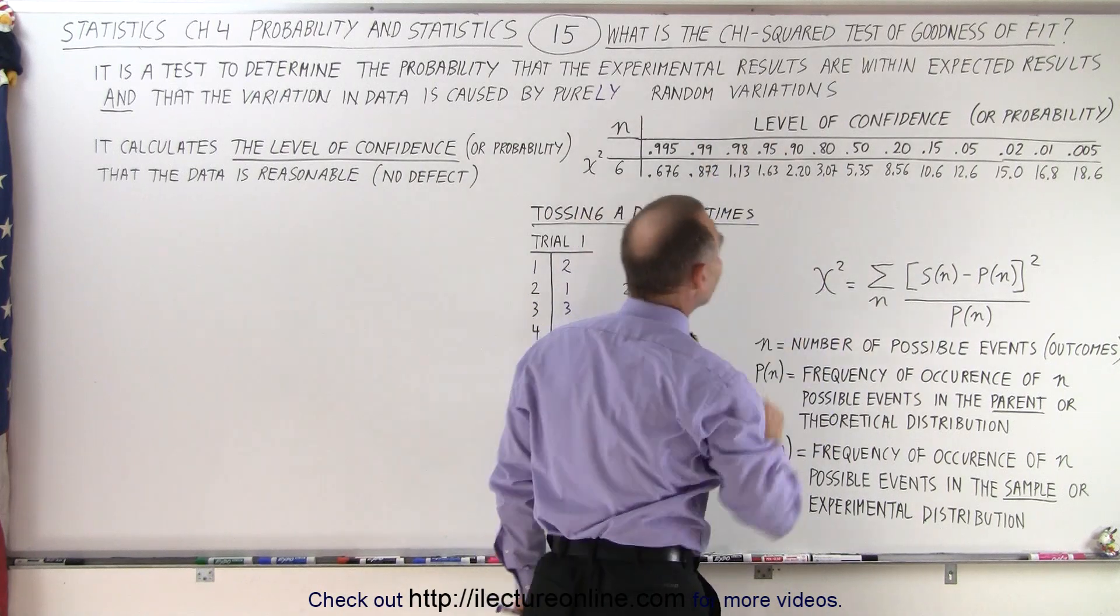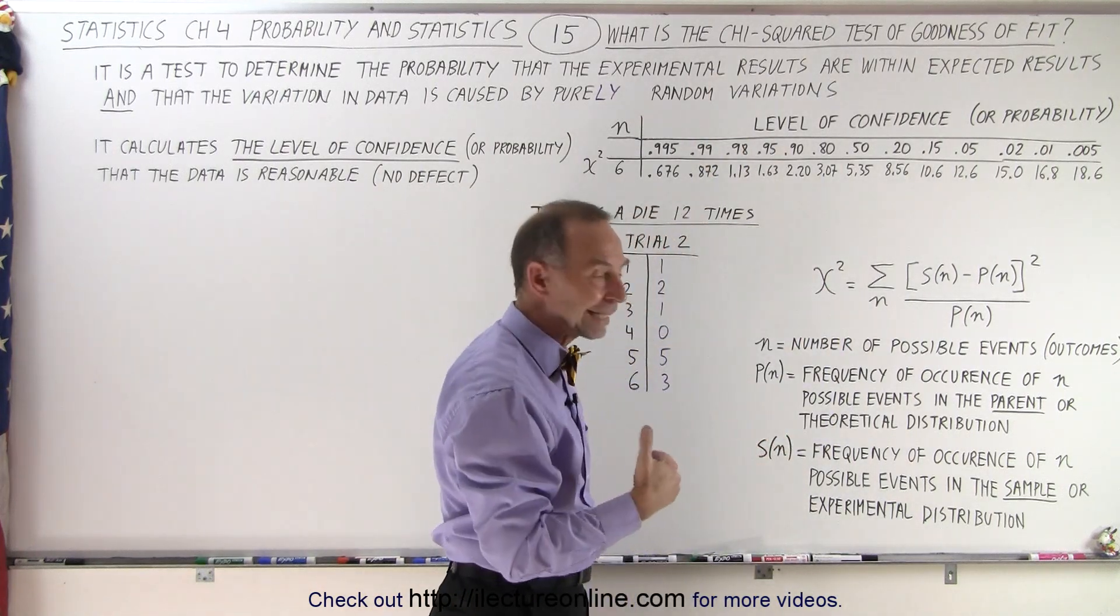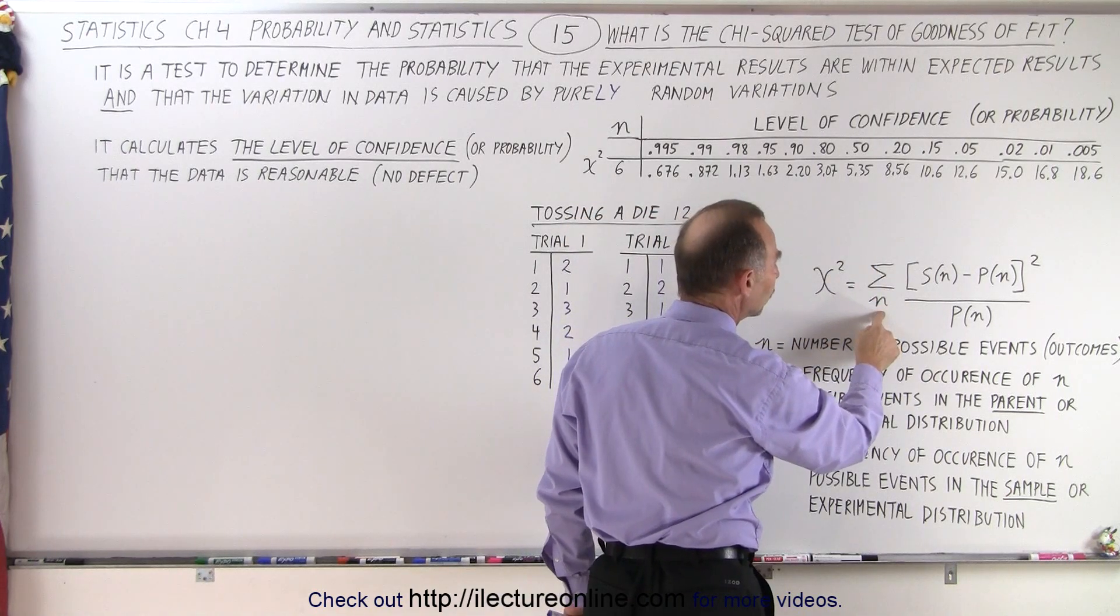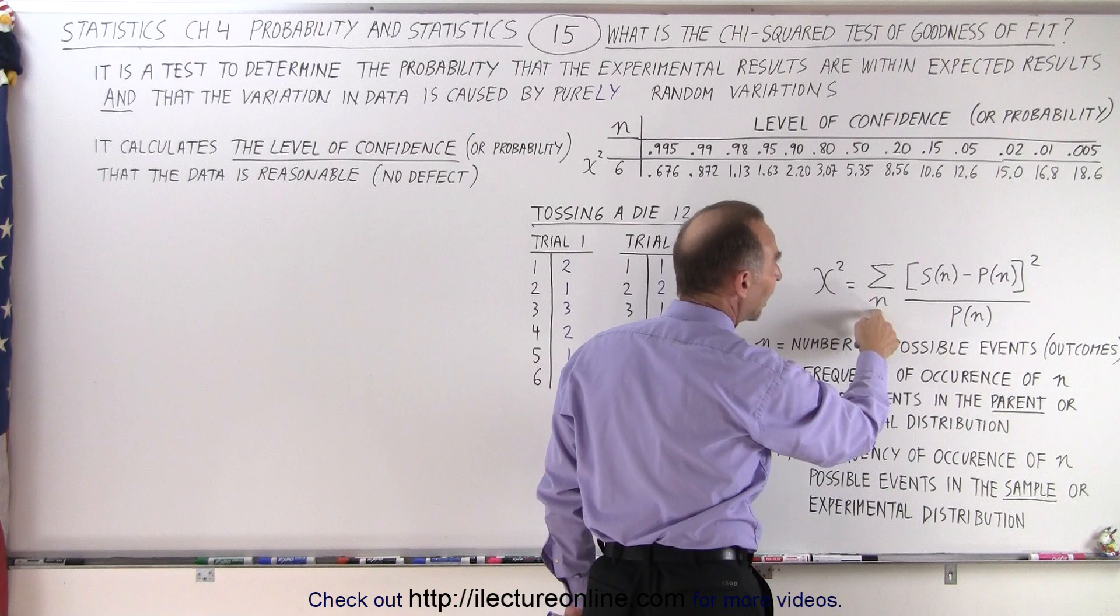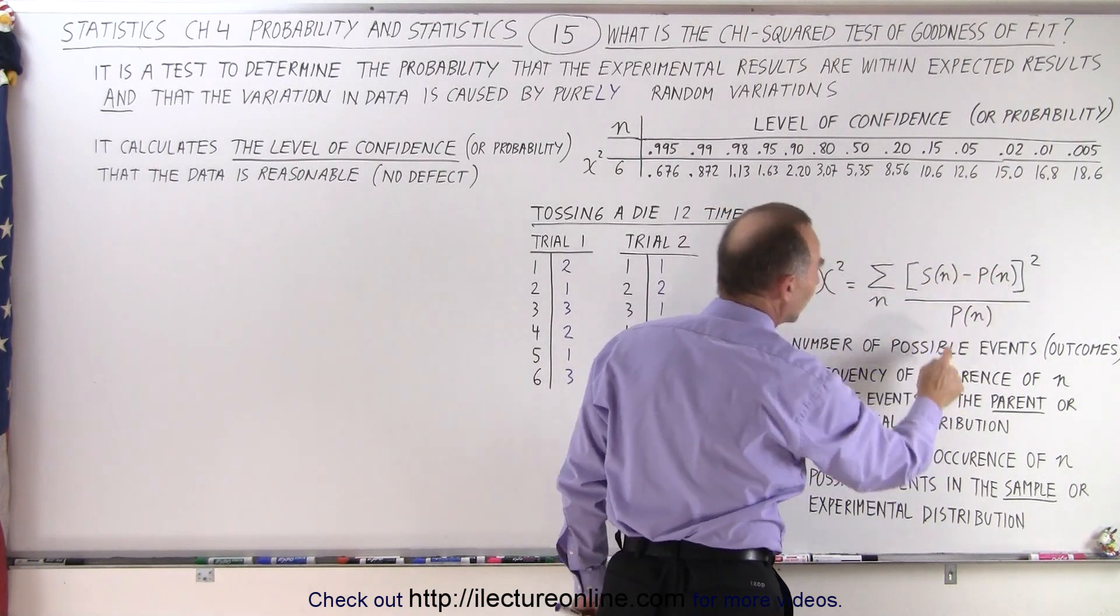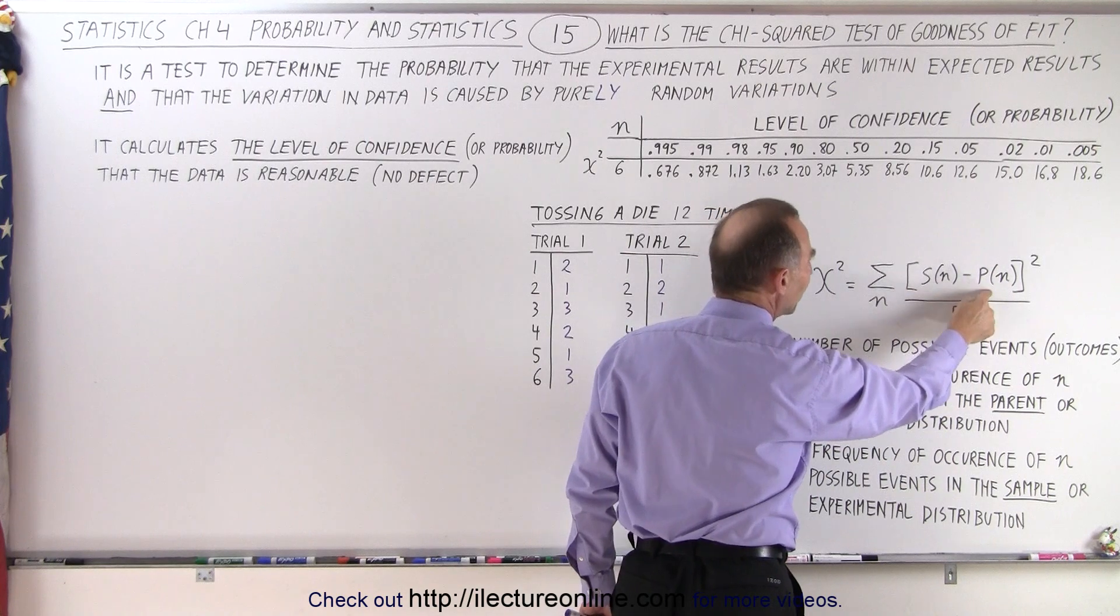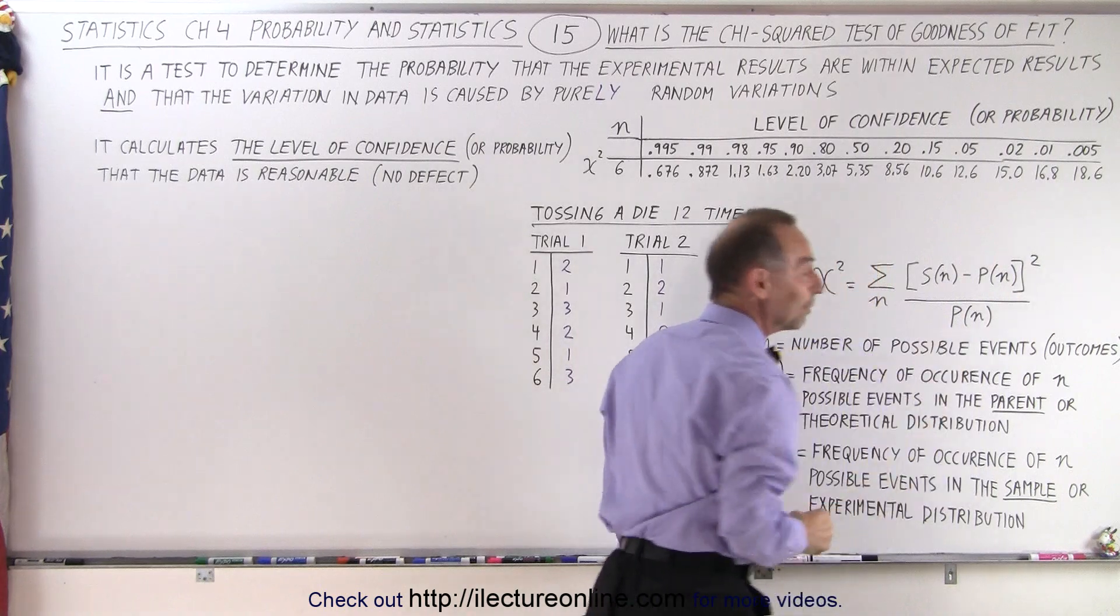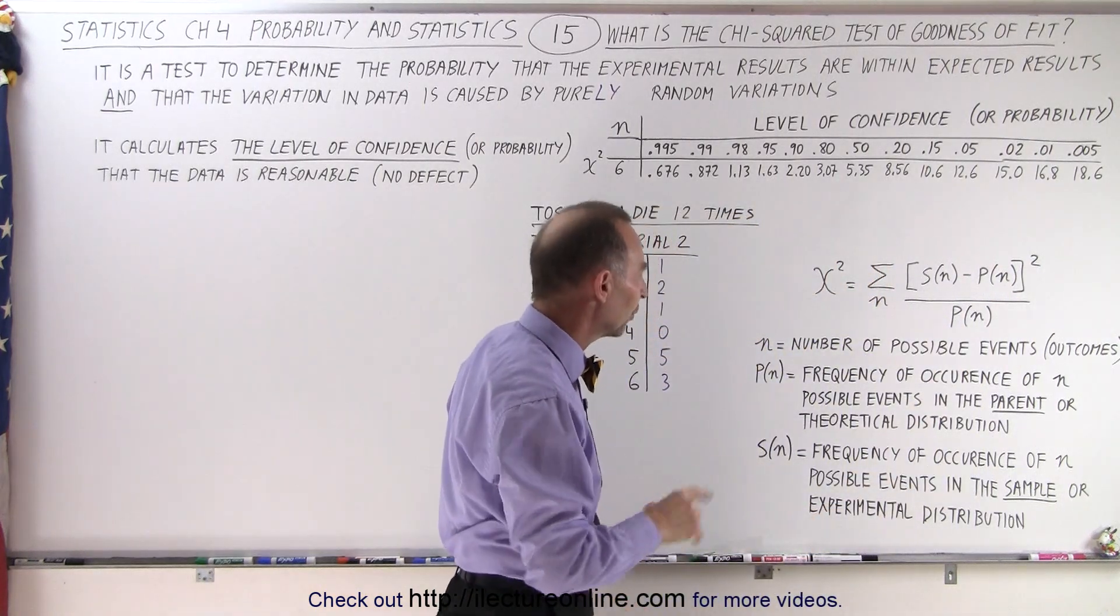So chi is pronounced chi, like the K sound. So chi equals the sum of all the trials, of all the tosses of a die, for example. And it's the sum of the difference between S sub N minus P sub N divided by P sub N. Of course, S sub N minus P sub N, quantity squared. So what is that? What are those things?